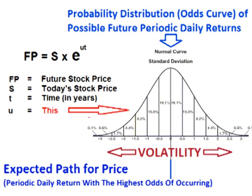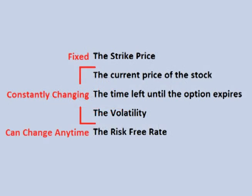In the last video I mentioned that option pricing only has 5 inputs, or 6 if the stock pays a dividend. The strike price is fixed, but the stock price, the volatility, and the amount of time left until the option expires are constantly changing, and interest rates may change at any time. As these values change, they affect the price of the option.